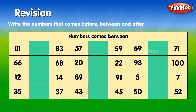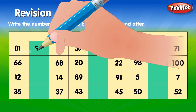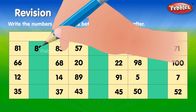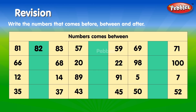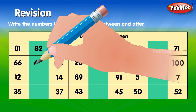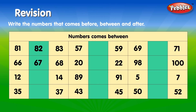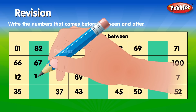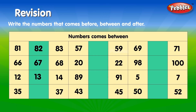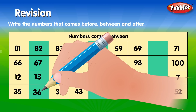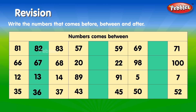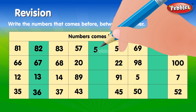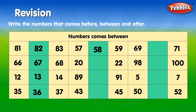Number comes between. 81, 82, 83. 66, 67, 68. 12, 13, 14. 35, 36, 37. 57, 58, 59.